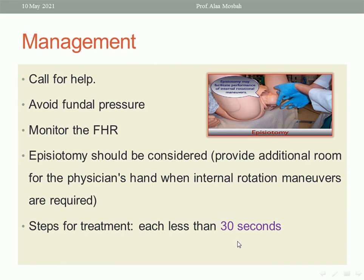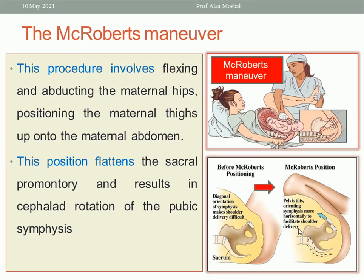Steps for treatment — go through certain steps. Please remember: don't take more than 30 seconds in each step. First, try the McRoberts maneuver. Ask the assistant to flex the legs of the patient on her abdomen with abduction. This is called the McRoberts maneuver, as you see in the picture. It flattens the promontory of the sacrum, decreases lordosis, increases the plane of the pelvic inlet, and makes the symphysis pubis shift cephalad. This McRoberts position is very important.